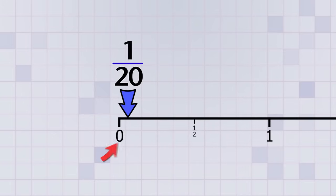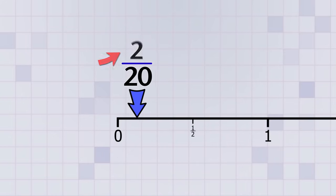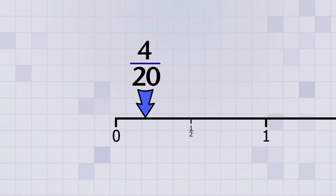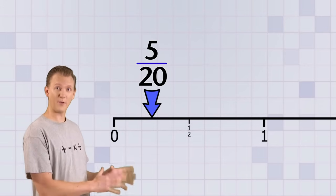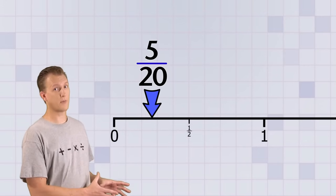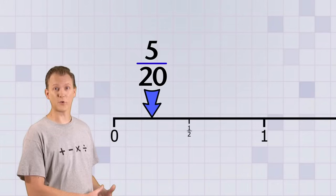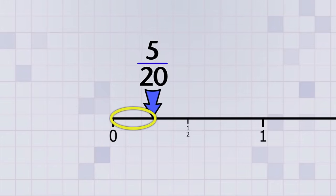We haven't gotten very far from 0 yet, and you might have noticed that the top number is still very small compared to the bottom number. But as the top number gets bigger, the value of our fraction is increasing. That tells us that if a fraction's top number is a lot smaller than its bottom number, then its value is going to be close to 0 on the number line.